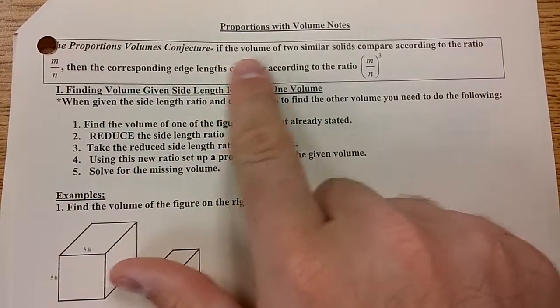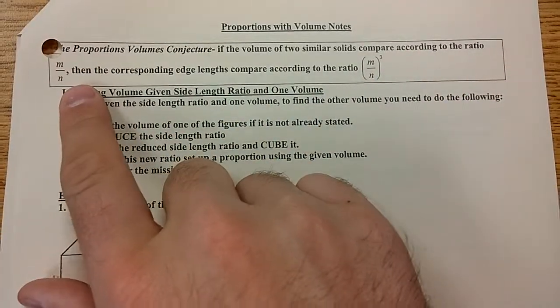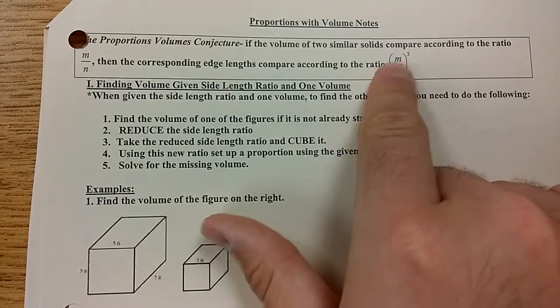The rule is, if the volume of two similar solids compare according to the ratio M over N, so just two numbers, then the corresponding edge lengths compare according to the ratio of M over N cubed.